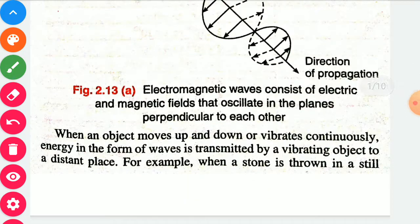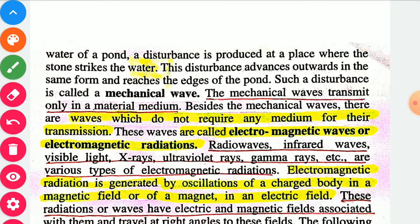When an object moves up and down or vibrates continuously, the energy in the form of waves is transmitted by vibrating objects to a distant place. For example, when a stone is thrown in still water of a pond, a disturbance is produced at the place where the stone strikes the water. This disturbance advances outwards in the same form and reaches the edge of the pond.